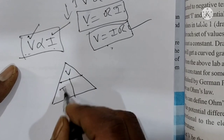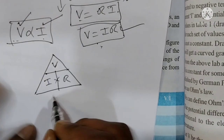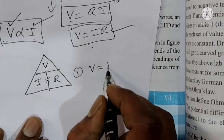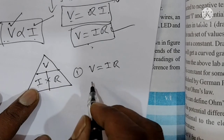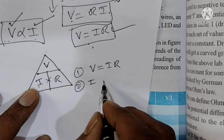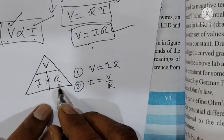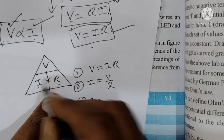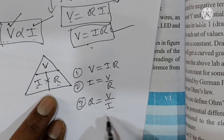So here, the first formula is V is equal to I into R. From that, the second formula is I is equal to V by R. And the third formula: R is equal to V by I. We have to learn these three formulas.